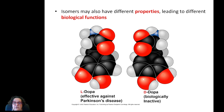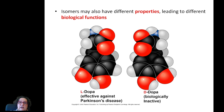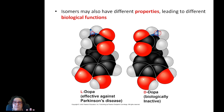Here is an example of two isomers of DOPA, a pharmaceutical drug used in Parkinson's disease. The black circles are carbons, the red ones are oxygens, the blue one at the top is a nitrogen, and the white-grey ones are hydrogens. As you can see, they are both optical isomers, and one of them is the active pharmaceutical drug while the other has no activity.